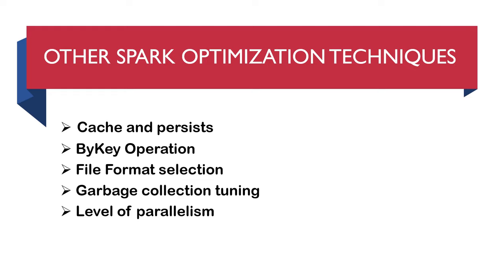Shuffles are heavy operations consuming a lot of memory. When coding in Spark, always try to avoid shuffle operations, as high shuffling may cause out-of-memory errors. To avoid such errors, increase the level of parallelism, use reduceByKey instead of groupByKey, and partition data correctly. By-key operations during RDD transformation generate a lot of shuffling, so minimizing them is an important optimization technique.